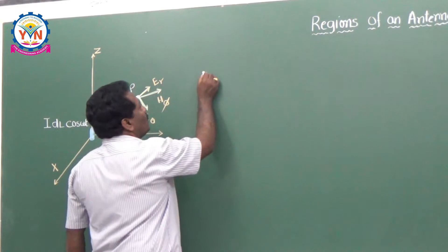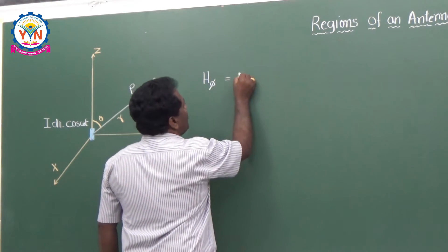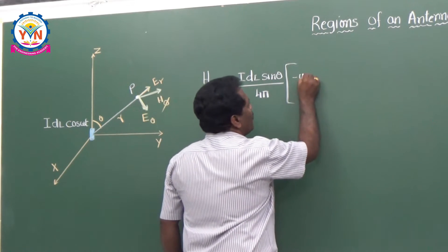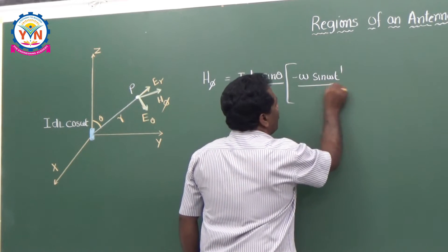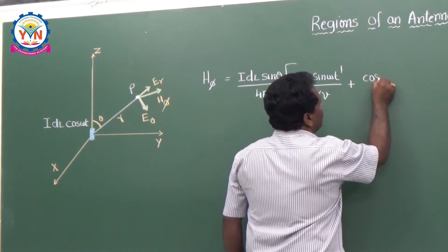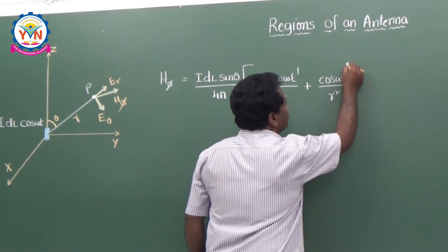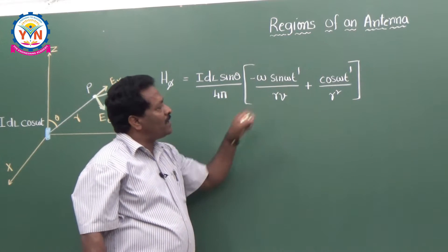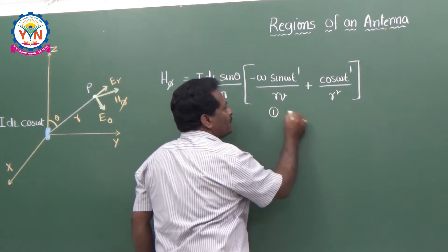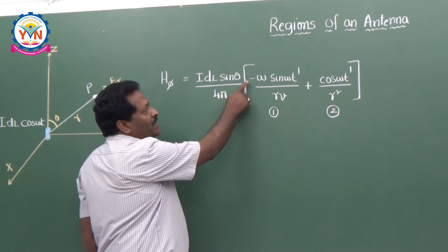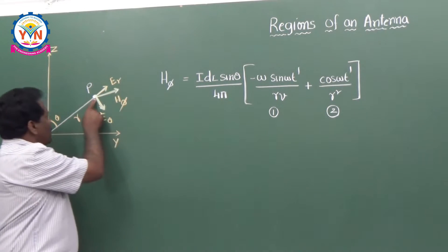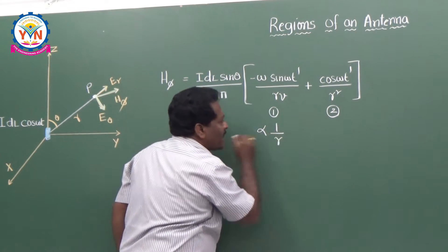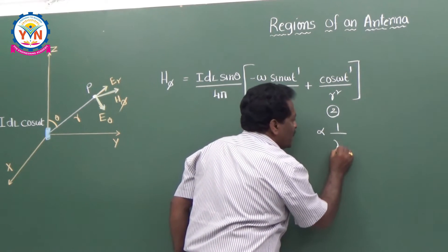What is H_phi? H_phi is equal to (I·dl·sinθ)/(4π), multiplied by [−ω·sin(ωt′)/(R·v)] plus [cos(ωt′)/R²]. This is the expression for H_phi. Just by looking at this expression, we can immediately say there are two terms. The first term is inversely proportional to distance R, and the second term is inversely proportional to R².